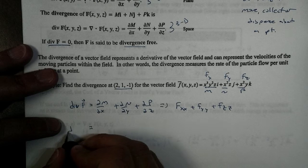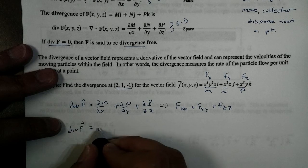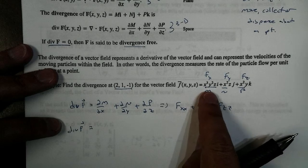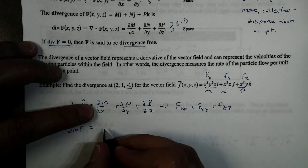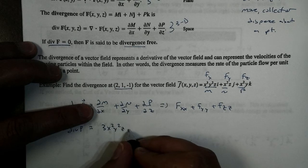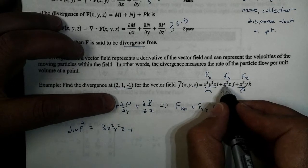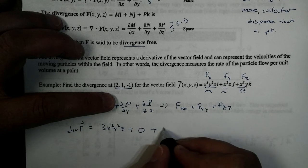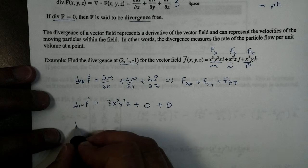So, getting our divergence, if we take a look at the first one, let's take a look here. If I take the derivative of M with respect to x, we're going to get 3x²y²z, plus the derivative of N with respect to y, that's just going to be zero, plus the derivative of P with respect to z, and again, that's just zero. And I just plug in my point.